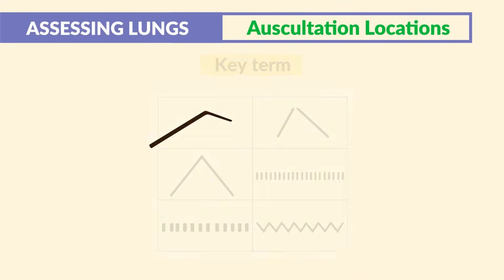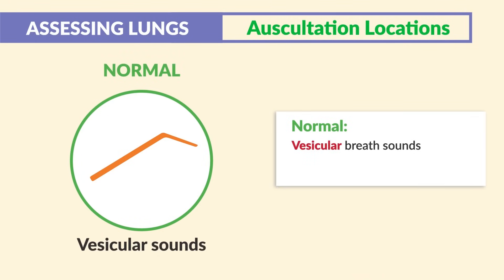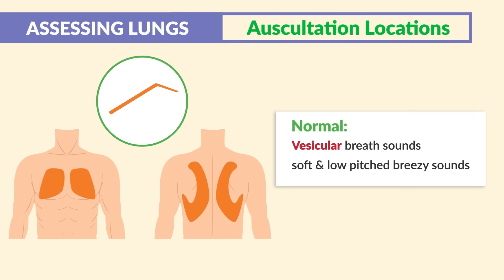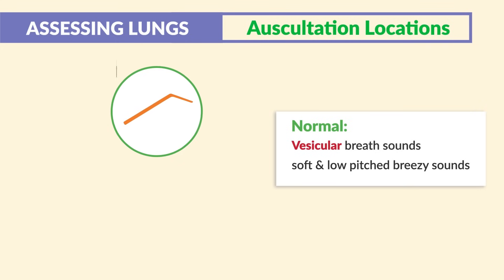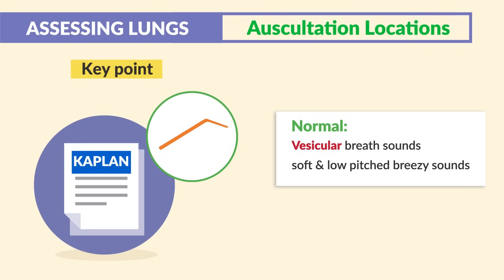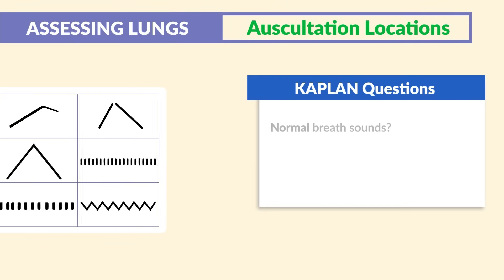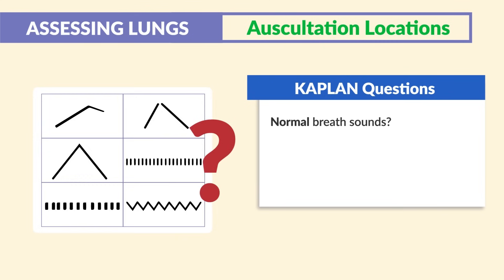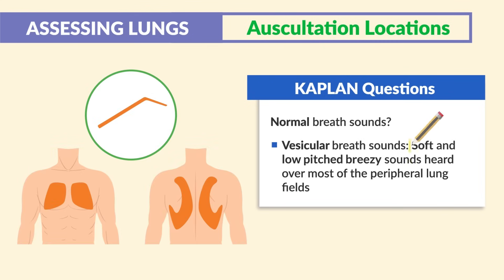Normal breath sounds are known as normal vesicular breath sounds — soft and low-pitched breezy sounds. This is a key point and a need-to-know for Kaplan standardized exams. Kaplan mentions that normal breath sounds are vesicular breath sounds: soft and low-pitched breezy sounds heard over most of the peripheral lung fields.